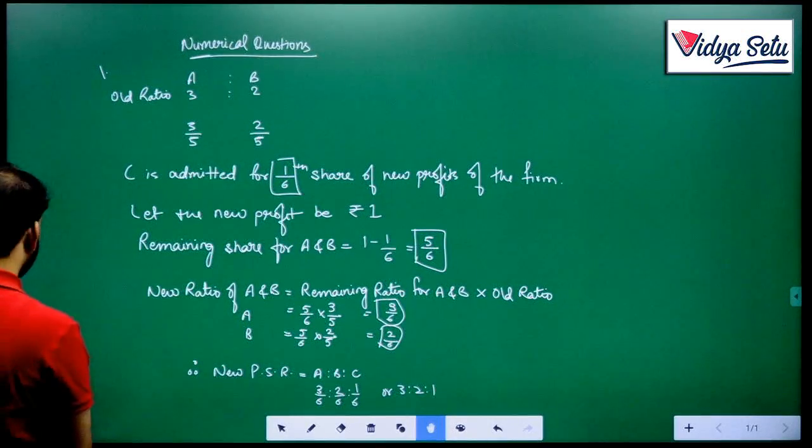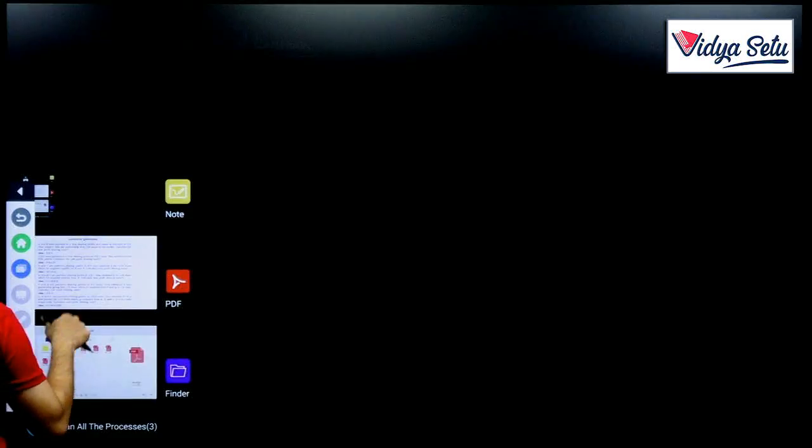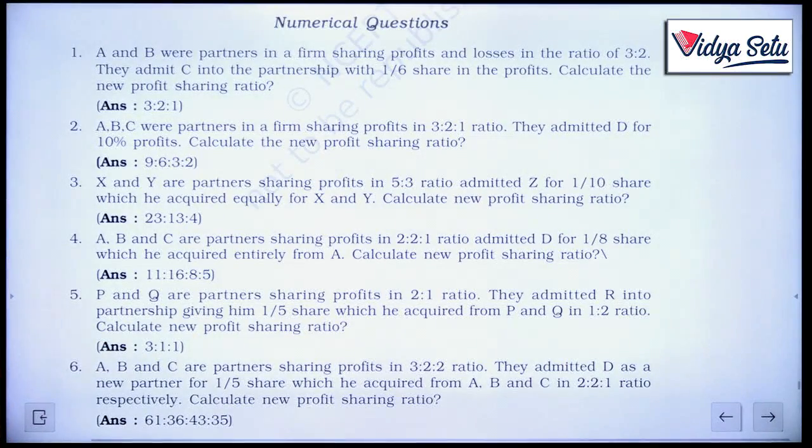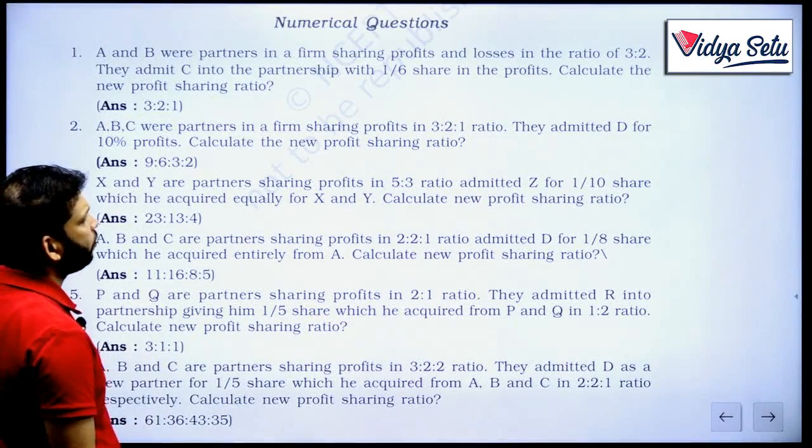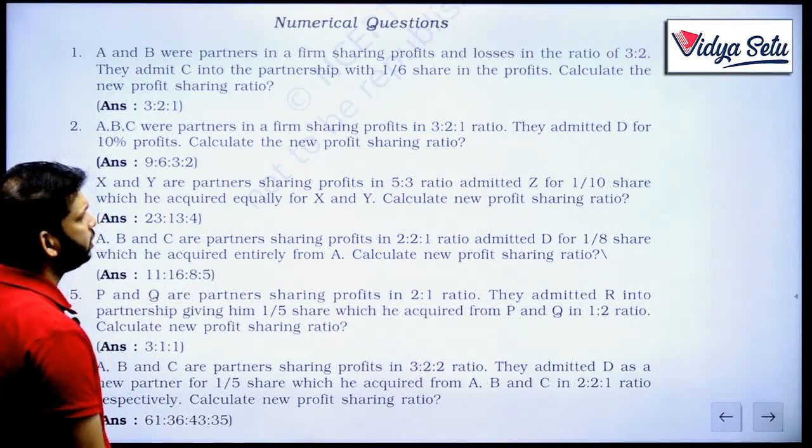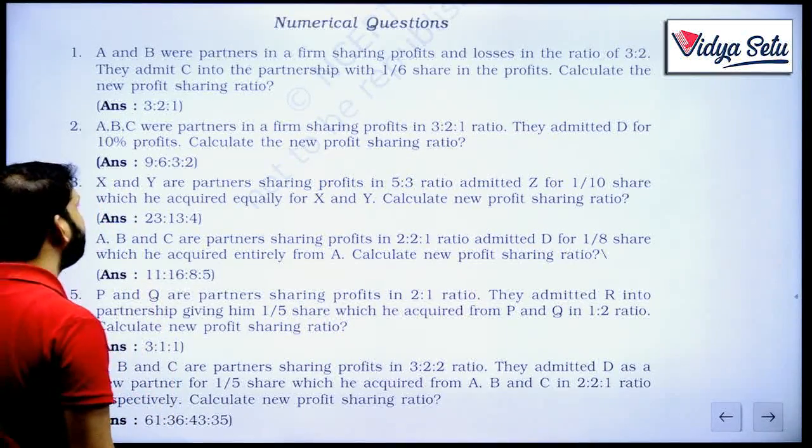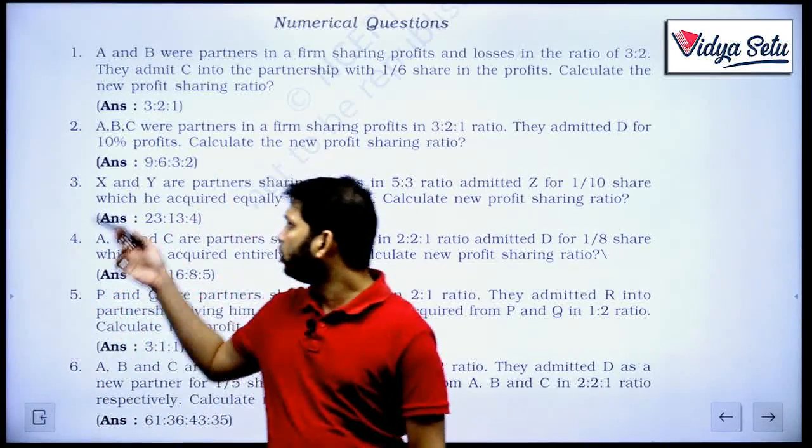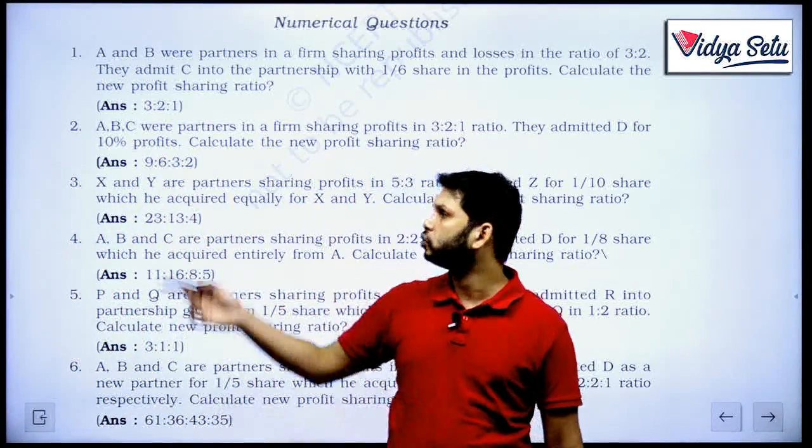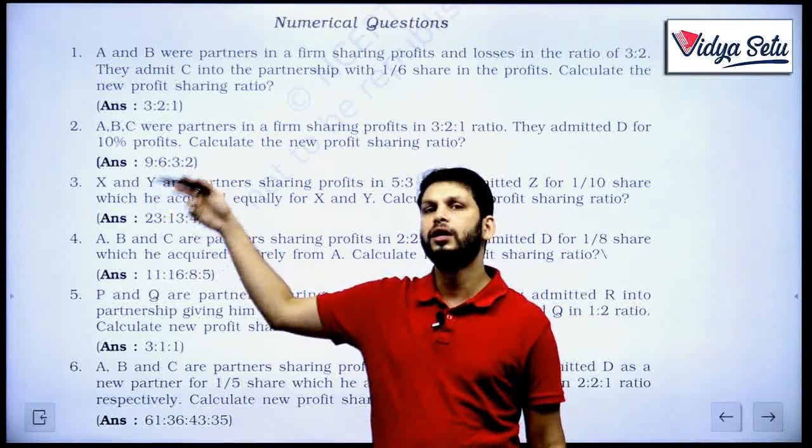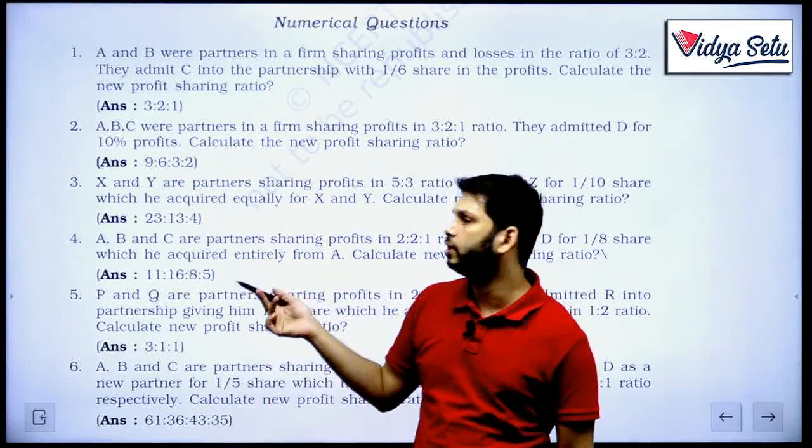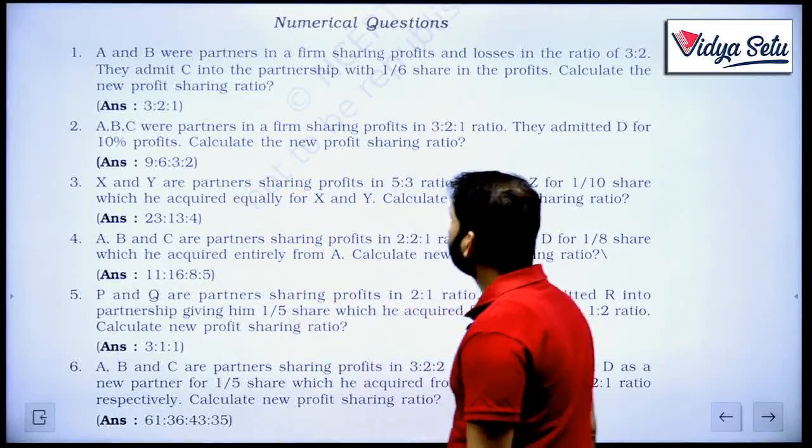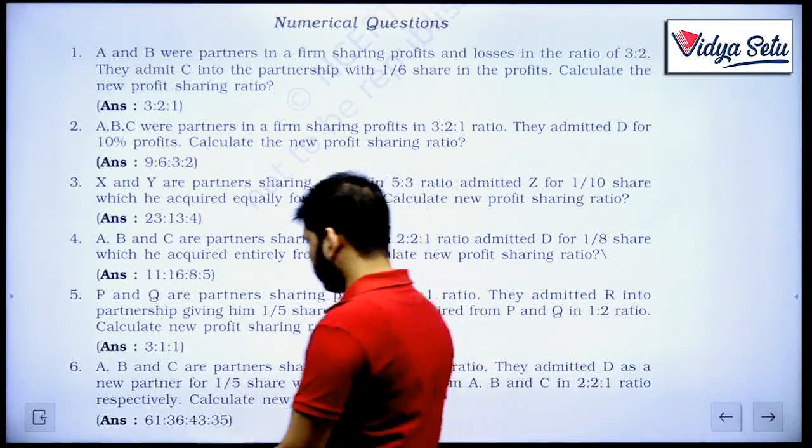Let us see question number 2 here. A, B, C were partners in a firm sharing profits in the ratio of 3 to 2 to 1. They admitted D for 10% of the profit. 10% we have to convert this percentage into fraction, so 10% is 10/100, that means 1/10. Calculate the new profit sharing ratio.